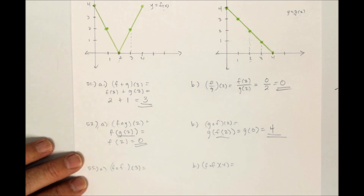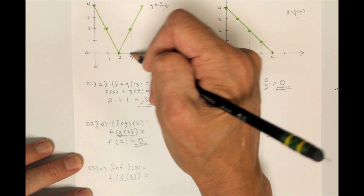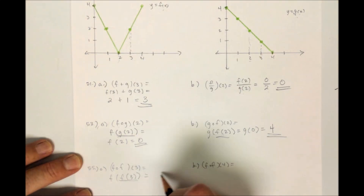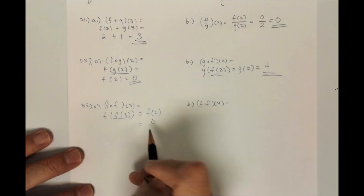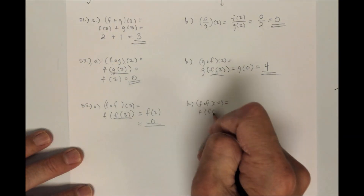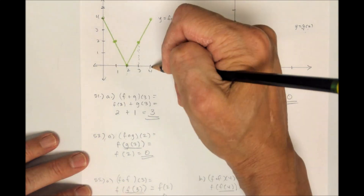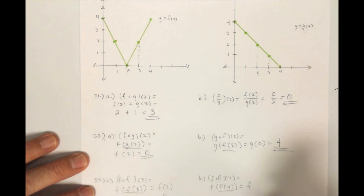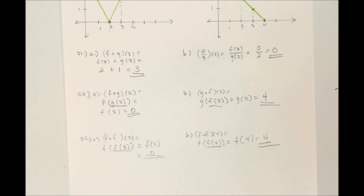For problem 55, f circle f of 3 means f of f of 3. The inside function f of 3 from the graph is 2. So this is f of 2, and f of 2 is 0. For f circle f of 4, that means f of f of 4. F of 4 from the graph is 4, so this is f of 4 again, which is still 4 — a bit of a weird one where I got the same value twice. And that's pretty much how you do those.